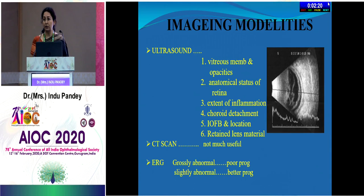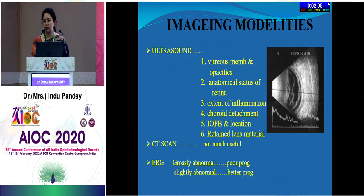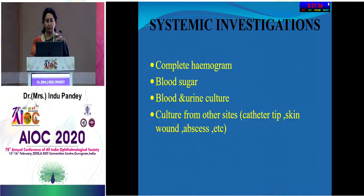Ultrasound B-scan is mandatory in all cases of endophthalmitis when fundus details are not visible, providing information about vitreous status, membranes, opacity, retinal anatomy, extent of inflammation, choroidal detachment, and retained foreign bodies. Systemic investigations include complete hemogram, blood sugar, blood and urine culture, and cultures from other infected foci if present.